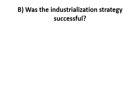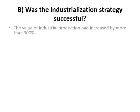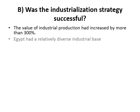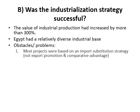The industrialization strategy had both positive and negative impacts. Among the positive impacts, the value of industrial production increased by more than 300%, and Egypt developed a relatively diverse industrial base.